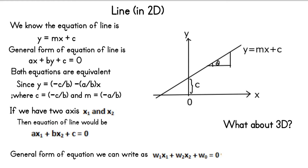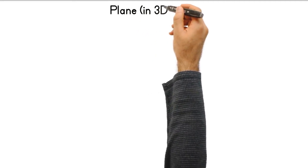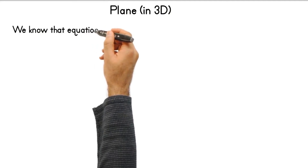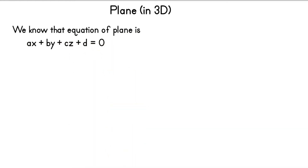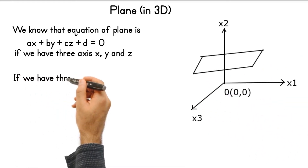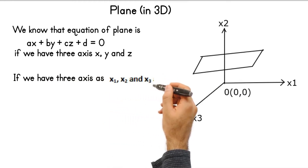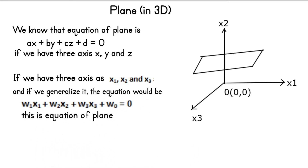The same notations we will use for higher dimensions. A line is a linear surface in 2D. The equivalent idea of a line in 2D is a plane in 3D. In school we learned the equation of a plane as ax + dy + cz + d = 0. Here we have three axes x1, x2, and x3, and if we generalize it, the equation would be w1*x1 + w2*x2 + w3*x3 + w0 = 0, which is the equation of a linear surface — the plane. So in 2D it is called a line, in 3D it is called a plane, and in ND it is called a hyperplane.